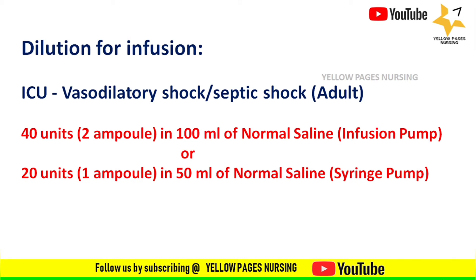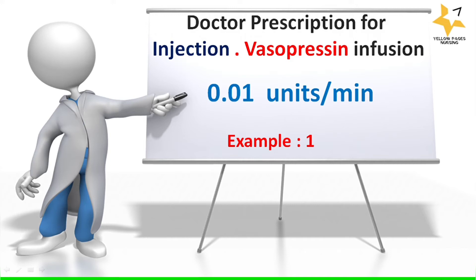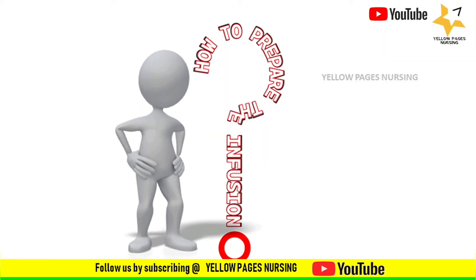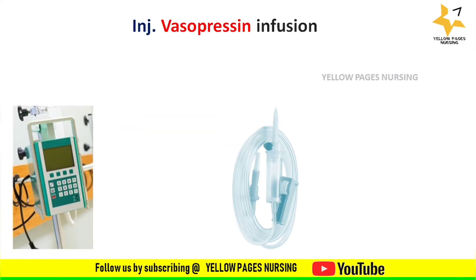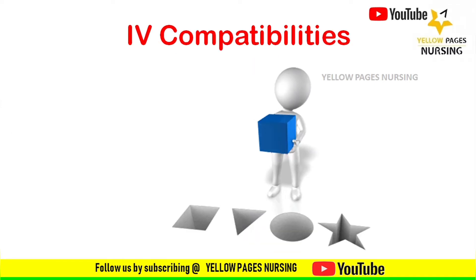Remember that 1 ml of solution contains vasopressin 20 units per ml. For the example, doctor's prescription for injection vasopressin is 0.01 units per minute. To prepare the infusion, all we need is an infusion pump or a syringe pump, an IV set, a 50 ml syringe, and the solution for dilution.